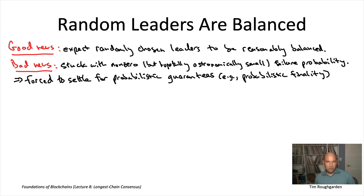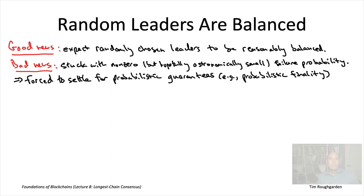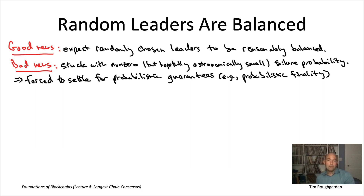If you want zero failure probability, you can literally never consider any block confirmed, which is not very useful. So the only option with longest chain consensus and randomly chosen leaders is to have probabilistic versions of the three guarantees. You want to say: except with astronomically small probability, the common prefix property will hold, and for any given confirmed block, except with astronomically small probability, it won't get rolled back. Similarly for probabilistic liveness. Bitcoin, for example, does not offer guaranteed finality — only probabilistic finality.